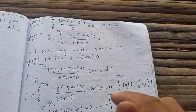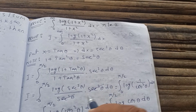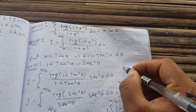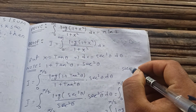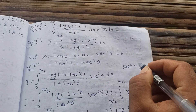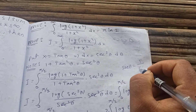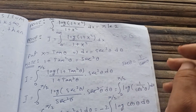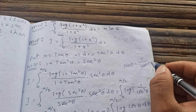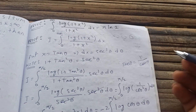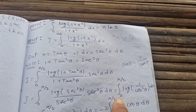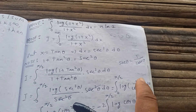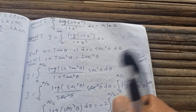After cancellation we have I = integral from 0 to π/2 of log(sec²θ) dθ. Since sec θ = 1/cos θ, this equals the integral from 0 to π/2 of log(1/cos θ) dθ.